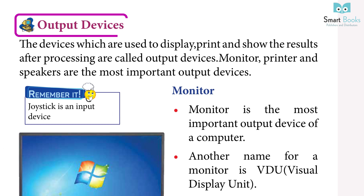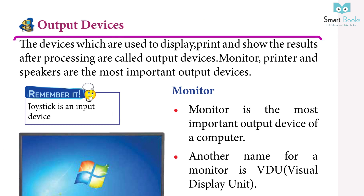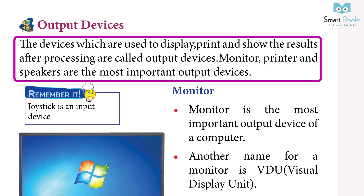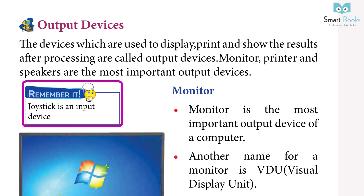Output devices: the devices which are used to display, print and show the results after processing are called output devices. Monitor, printer and speakers are the most important output devices. Remember: joystick is an input device.